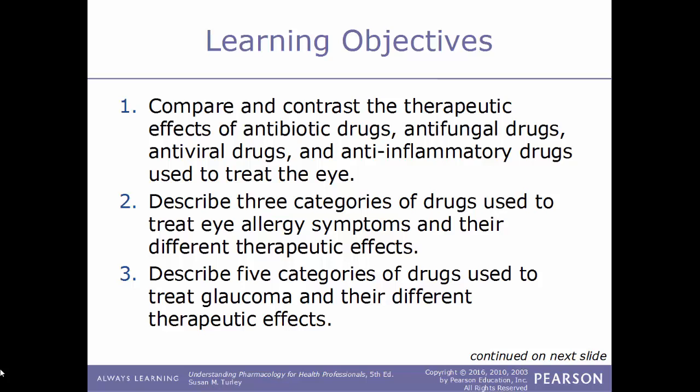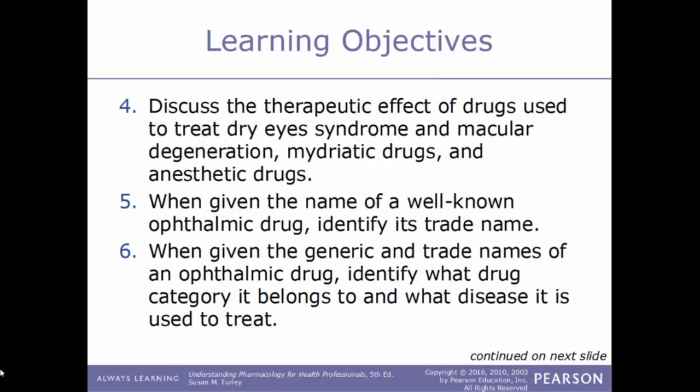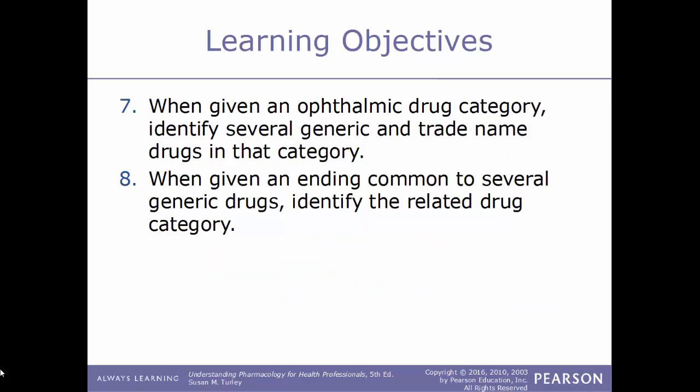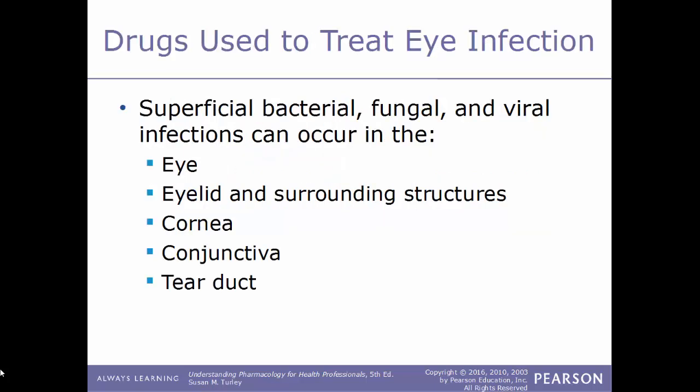Describe three categories of drugs used to treat eye allergy symptoms and their different therapeutic effects. Describe five categories of drugs used to treat glaucoma and their different therapeutic effects. Discuss the therapeutic effect of drugs used to treat dry eye syndrome, macular degeneration, mydriatic drugs, and anesthetic drugs. Given the name of a well-known ophthalmic drug, identify the trade name. When given the generic and trade names of an ophthalmic drug, identify what drug category it belongs to and what disease it is used to treat. When given an ophthalmic drug category, identify several generic and trade name drugs in that category. And lastly, when given an ending common to several generic drugs, identify the related drug category.